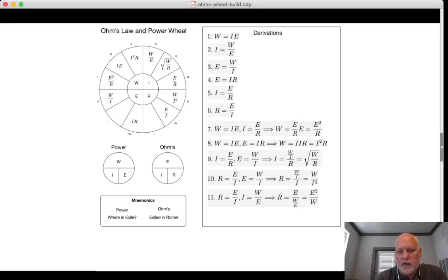Do a little bit of algebra here. And we multiply E times the reciprocal of W over E, which is E over W. It becomes E squared over W. Nice and simple. Plug it in.